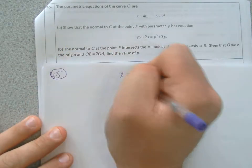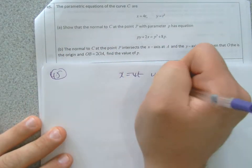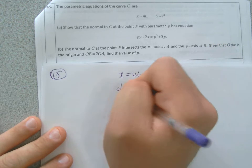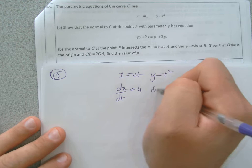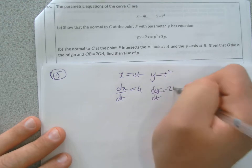x equals 4t, y equals t squared. Take the derivatives: dx/dt equals 4, dy/dt equals 2t.